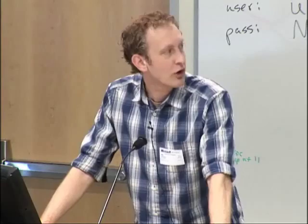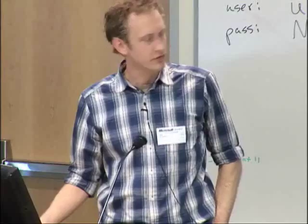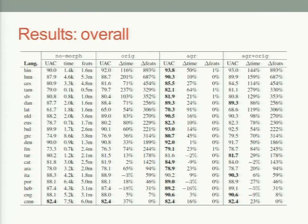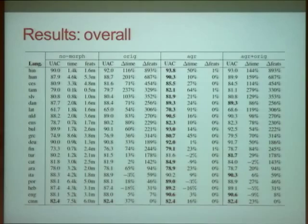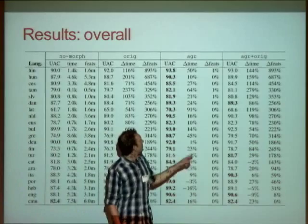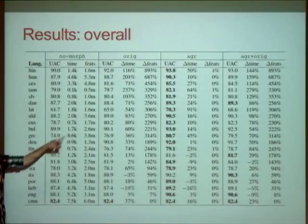We ran the parser on each tree bank four times: once with original features out of the box, once with just our features replacing the original, once with both sets, and once with neither. The word order and POS tag features were always retained; it's just the morphological features we were swapping in and out. Importantly, the runtime and feature counts are roughly the same for our agreement model and the no-features version, while the original feature set has much higher feature counts and runtimes. We were able to cut down the feature set size considerably.